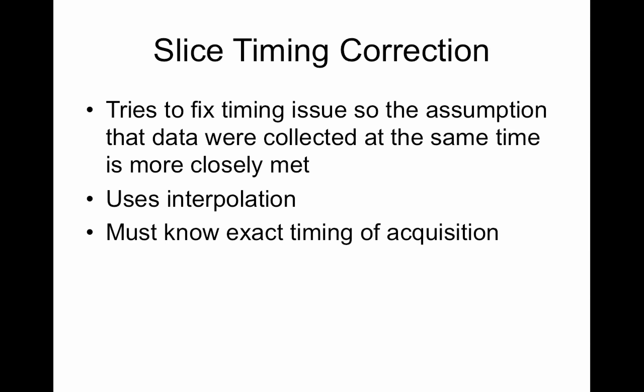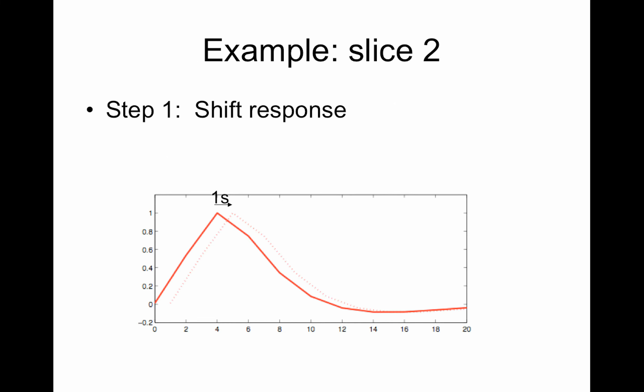The way slice timing correction works is to fix the slice timing issues so that the assumption that the data were collected at the same time is more closely met, and this is done via interpolation. Importantly, you have to know the exact timing of the acquisition — I mentioned that when setting up the GUI to make sure you select the right option. So slice two is one second away, so we have to shift it one second forward, because the peak was showing up earlier than it should since the data are actually collected later.